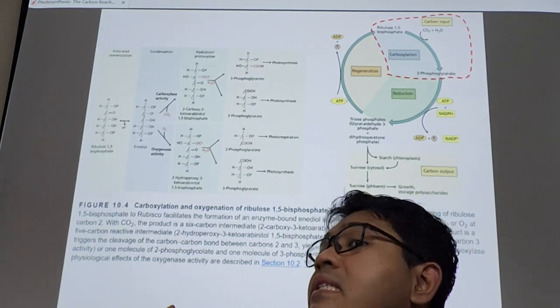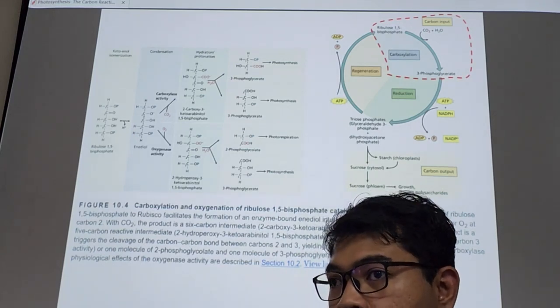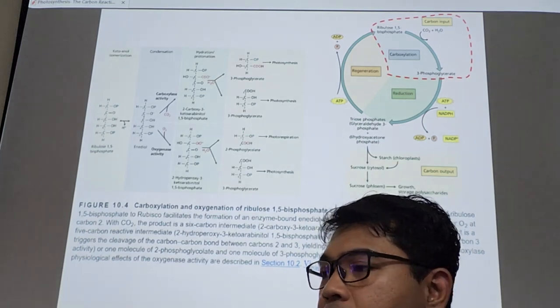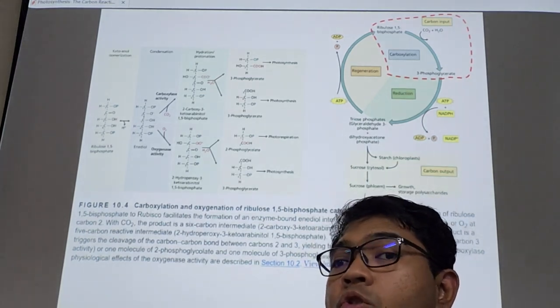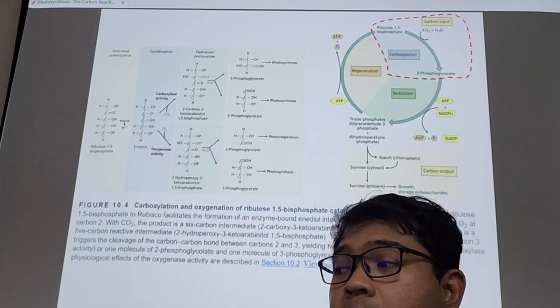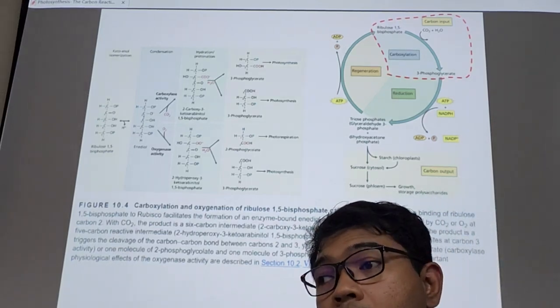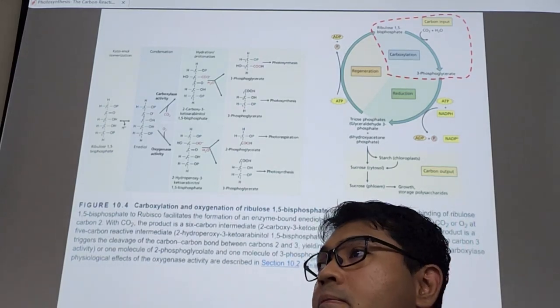When it gets too acidic. This is why plants not doing well in the field when it's too acidic. This is another reason. Usually you learn because of the nutrient availability, right? When it's too acidic, some nutrients are not well available. That is one thing. That's another thing: you create acidic environment in the chloroplast as well.